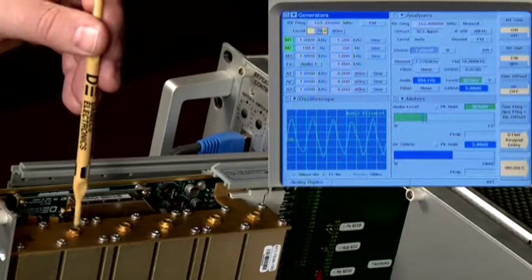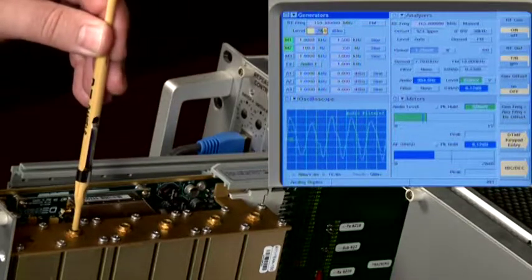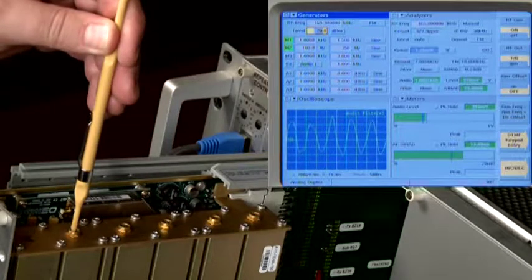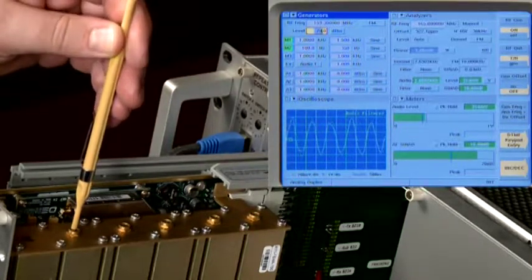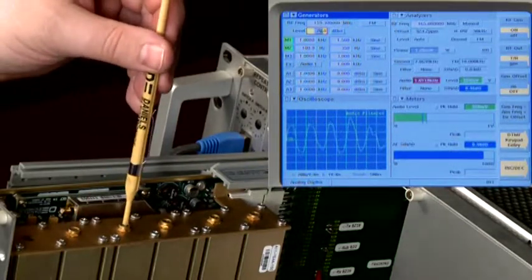Adjust the variable capacitors to tune the RF preselector. Set the signal generator so that noise can be heard on the speaker, then tune the capacitors for the best SINAD measurement. Continue reducing the signal generator level as the capacitors are tuned. There is no specific sequence to tune the capacitors.